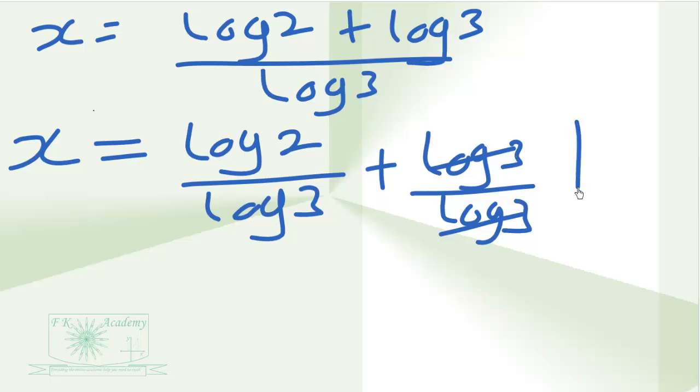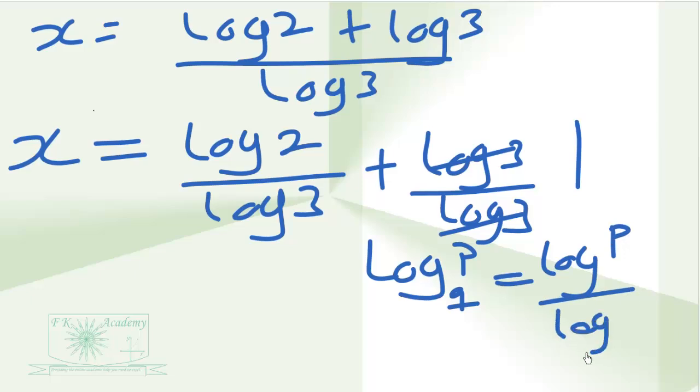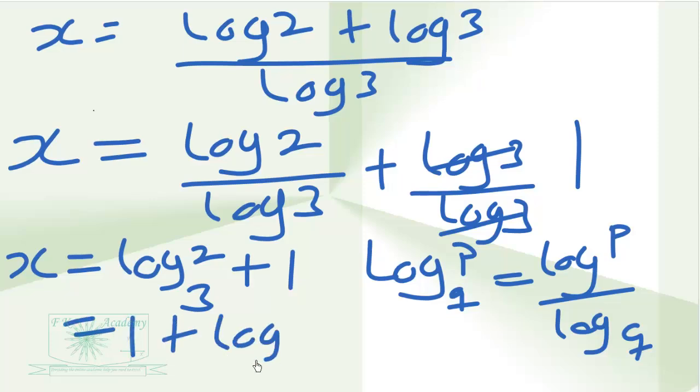Then we have the application of change of base formula. Logarithm of p minus q, it is the same as logarithm of p divided by logarithm of q. So we are going to obtain x to be equal to log 3, 2 plus 1. Or 1 plus log 3, 2.